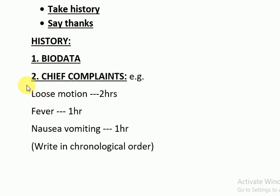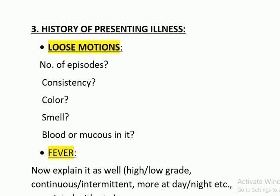Chronological means that those complaints — those issues that developed first — you have to mention them first, and those that developed later you have to mention later in your history. Then you have to present the history of the complaints — you have to elaborate the chief complaints.